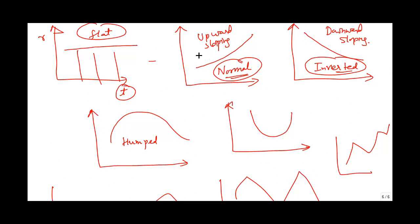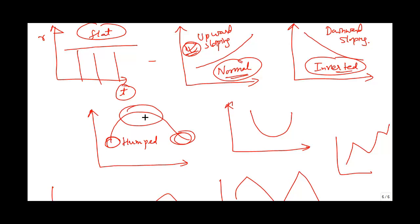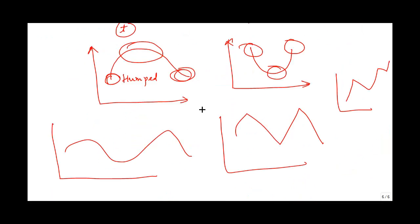These are the five shapes you see normally in real life, and the normal yield curve is the most important one. In the case of a humped yield curve, the short-term and long-term rates are lower while the middle-term rates are higher. In the U-shaped case, the short-term and long-term rates are higher while the middle-term rates are lower. It depends on the state of the economy — different types of yield curves are possible.